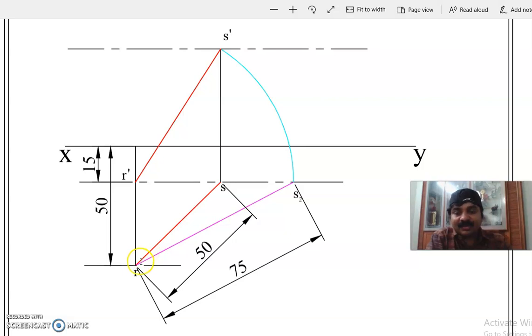Also the top view length is given. Top view length RS is 50mm. So this is one endpoint, RS equals 50mm. 50mm means the top view length. We will be cutting this locus line.